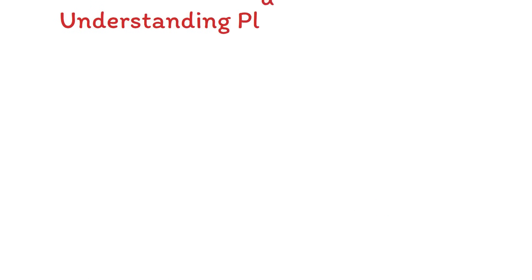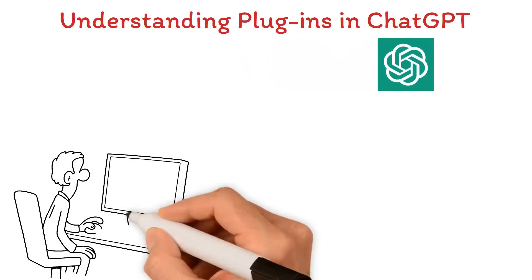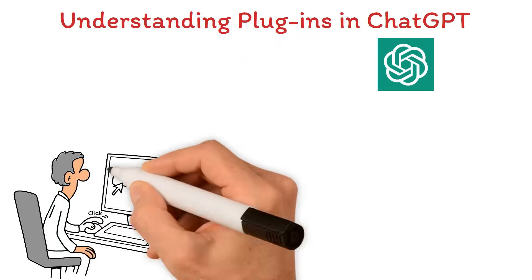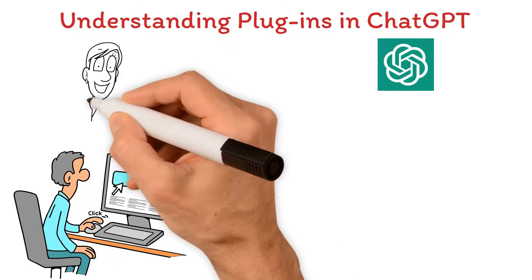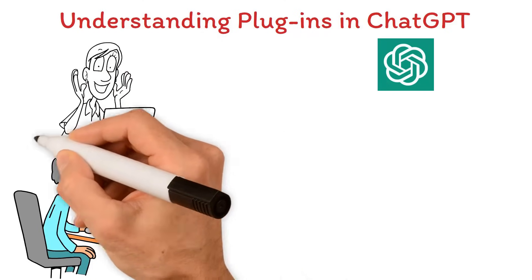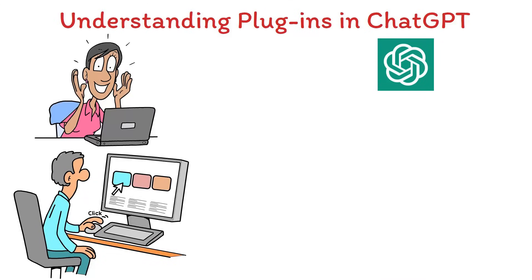Understanding plugins in ChatGPT. Plugins, in the context of ChatGPT, are additional code packages that extend the functionality of the base model. They provide features and options that are not initially available, allowing users to customize the model according to their specific needs.